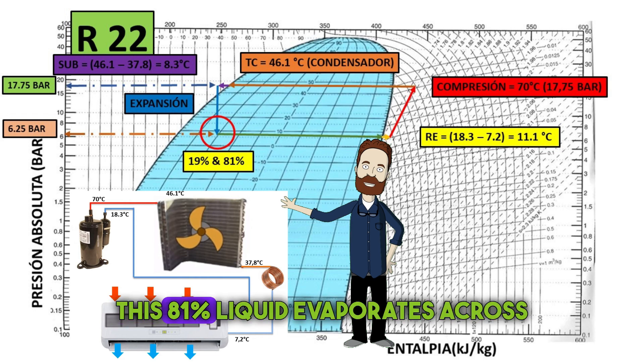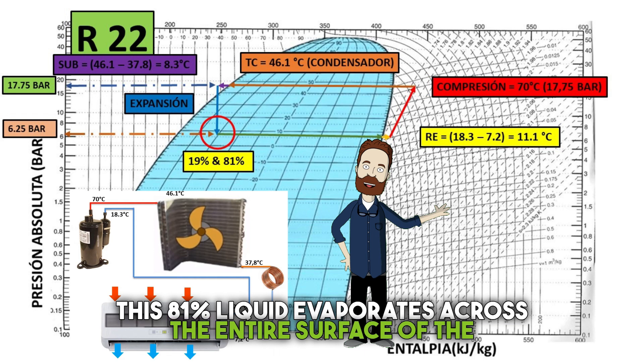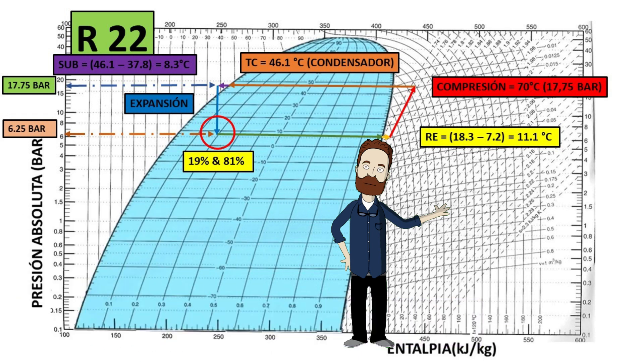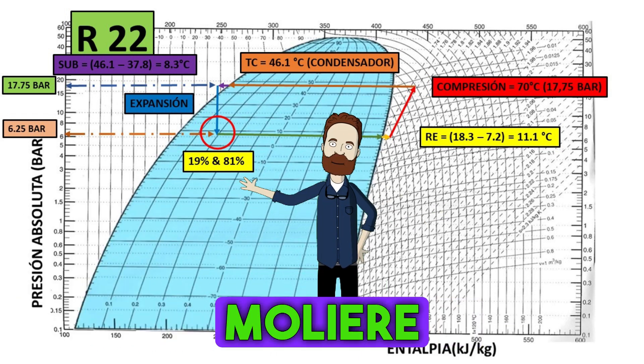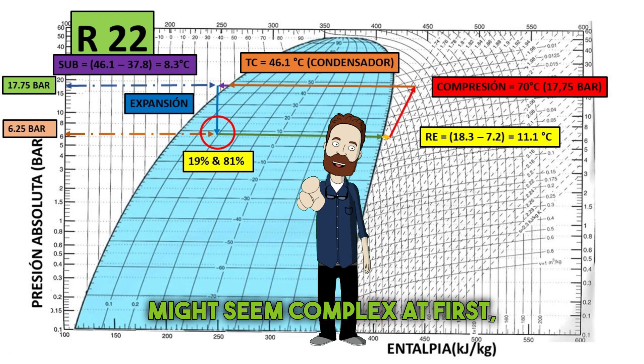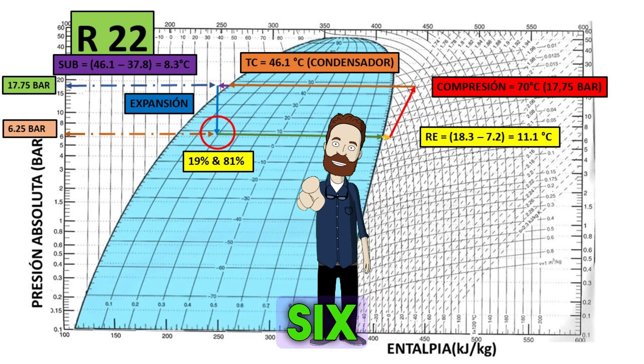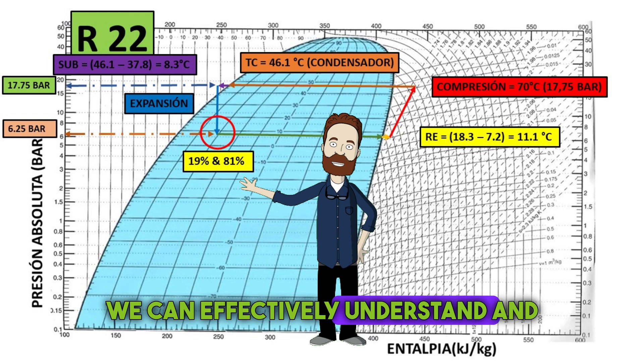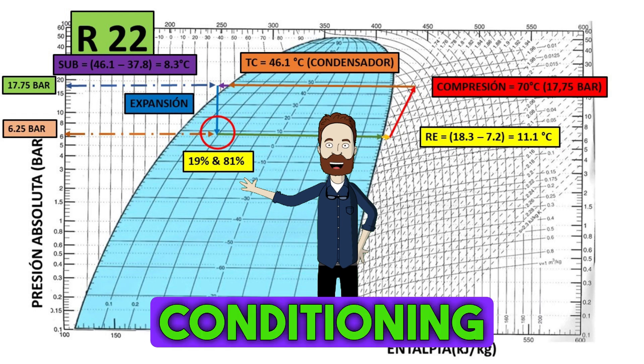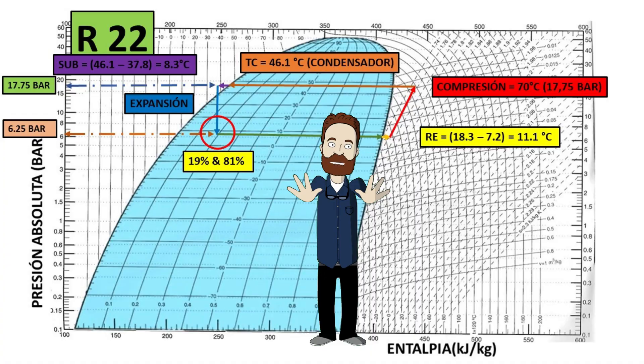This 81% liquid evaporates across the entire surface of the evaporator. As we've seen, the Moliere diagram might seem complex at first, but by following these six steps, we can effectively understand and map out the behavior of the air conditioning system.